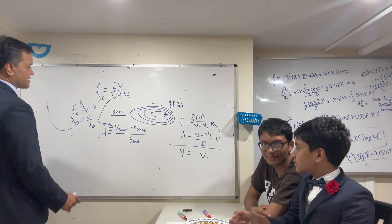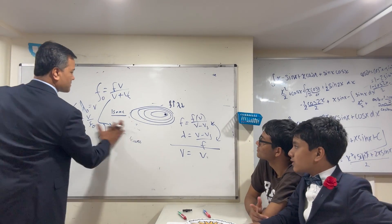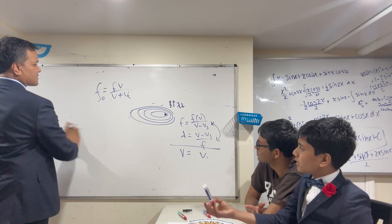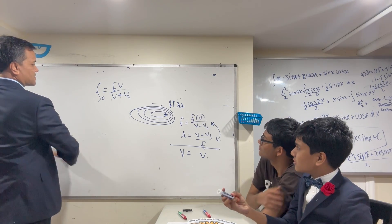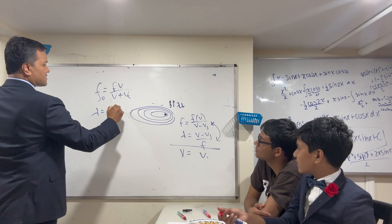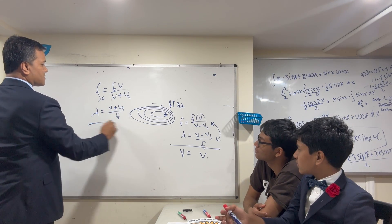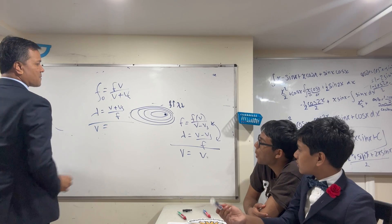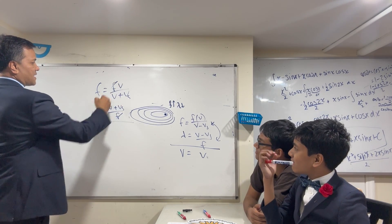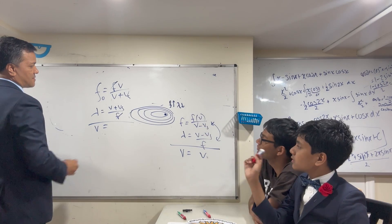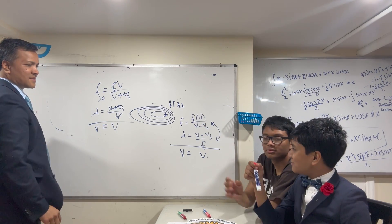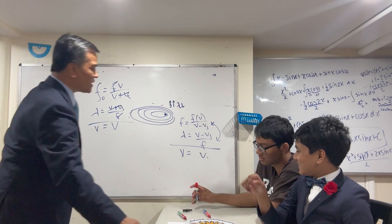Isaac wrote lambda equals (v_sound + v_source) / f_source. Multiplying frequency times lambda, the f_source cancels and v_sound + v_source gives v — confirming the wave speed relationship holds.